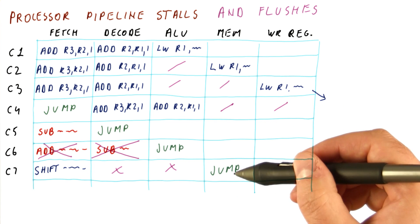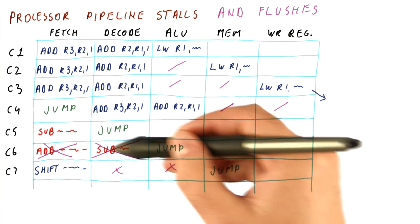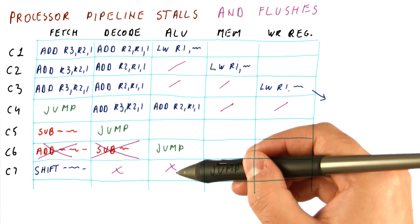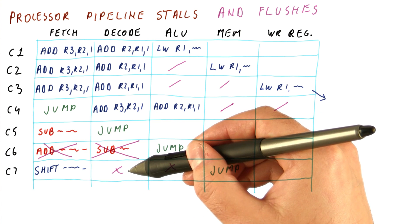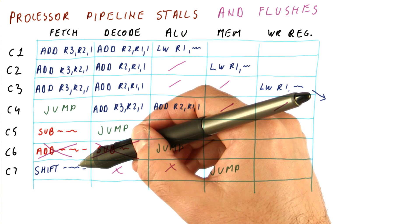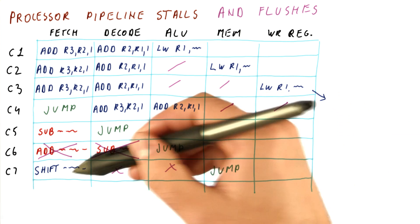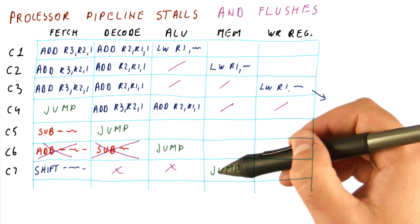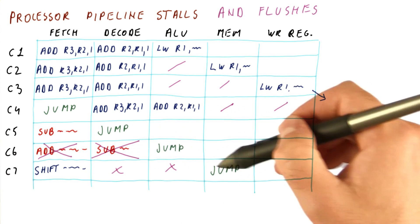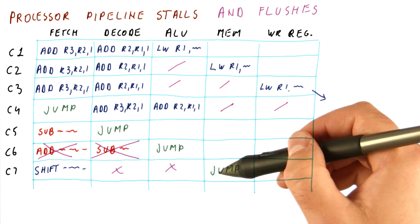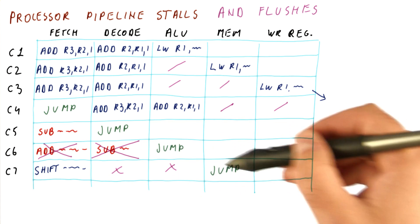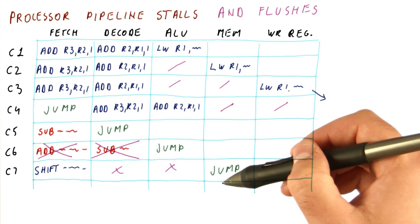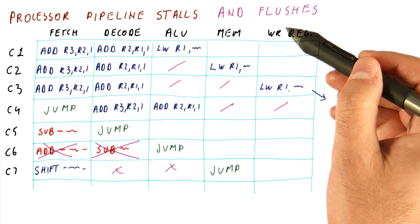So as you can see, a jump in this case, because it caused the pipeline flush, has two bubbles that follow it, and only then we have the next instruction. So if we count for these two instructions what the CPI is, it's actually four cycles for only the two instructions. So as you can see, these pipeline flushes are going to be an additional source of having a CPI larger than one.